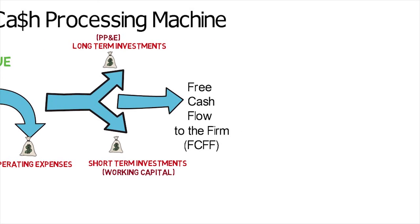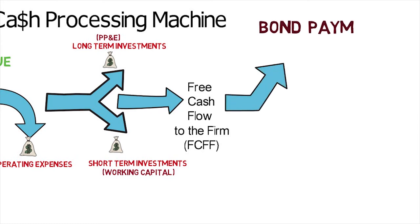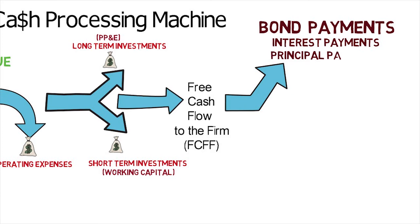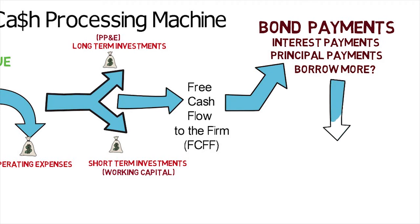Next, the company is obligated to take care of the bond investors, since bond investors are higher up the pecking order than stock investors. So, with their free cash flow to the firm, they pay the interest they owe to the bondholders. They may also pay bond principal, or perhaps even borrow more money with new bonds if they choose. So, after all bondholders are taken care of, what remains is known as free cash flow to equity.